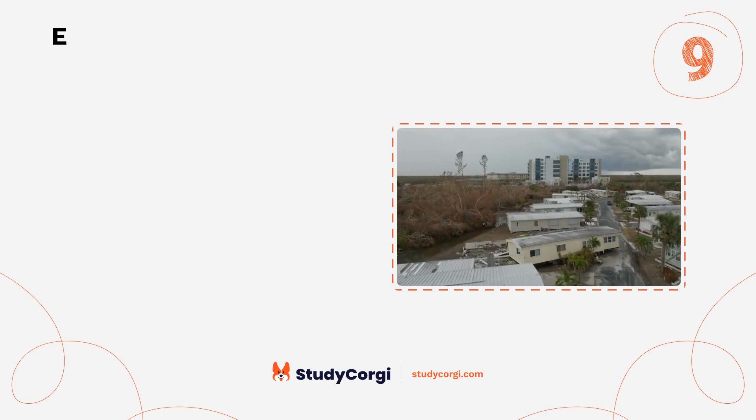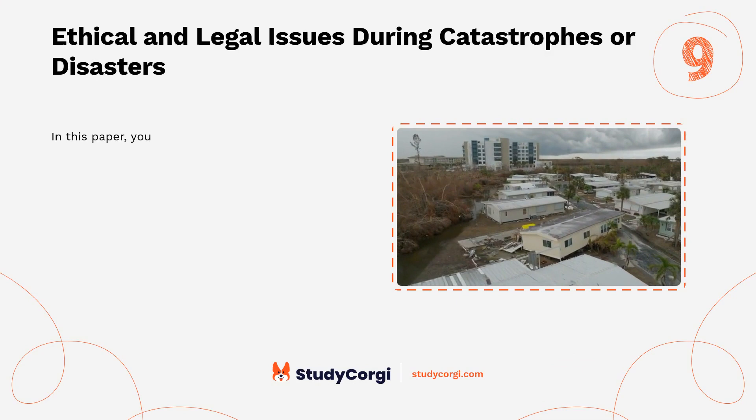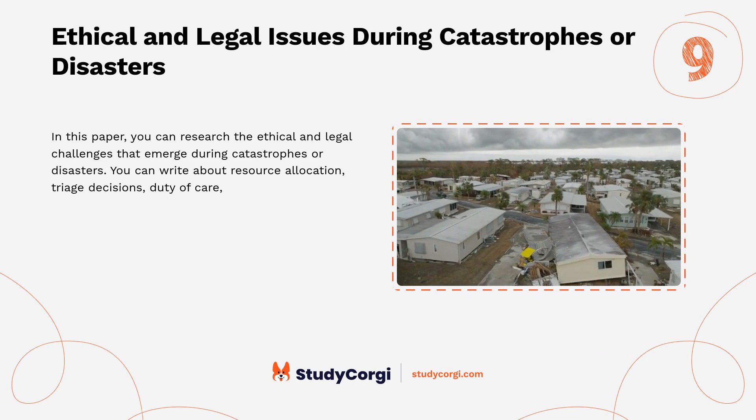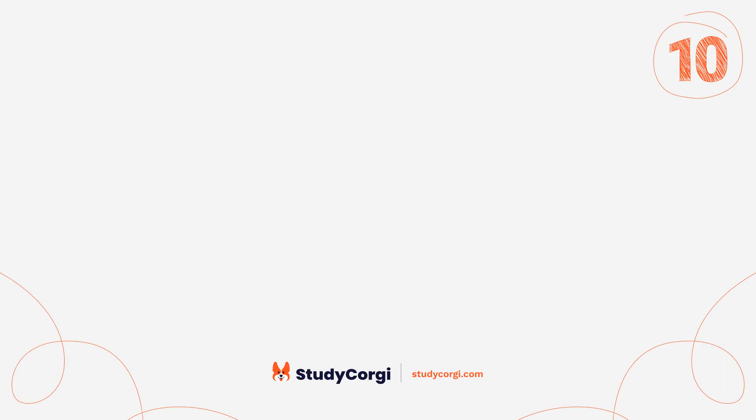Ethical and legal issues during catastrophes or disasters. In this paper you can research the ethical and legal challenges that emerge during catastrophes or disasters. You can write about resource allocation, triage decisions, duty of care, and government intervention. What ethical principles and legal frameworks guide decision-making in such situations?